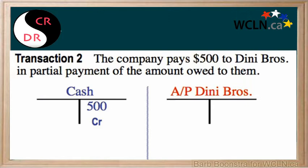By paying the $500 to Deeney Brothers, we have reduced the liability to that account. Liabilities are reduced on the debit side, so therefore there will be a $500 debit entry to balance this transaction.